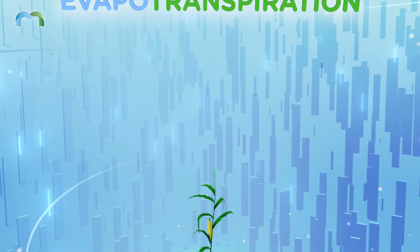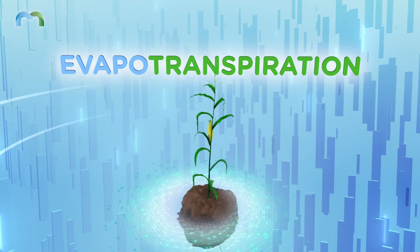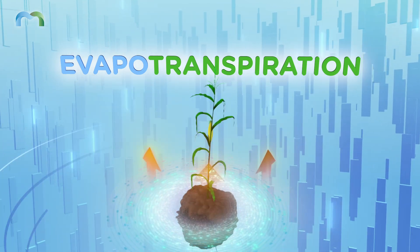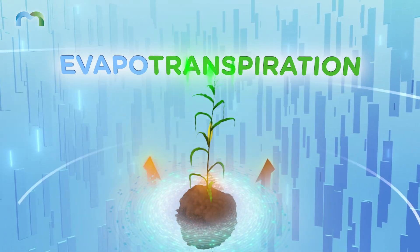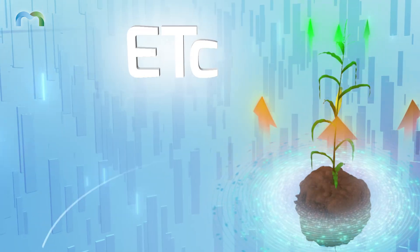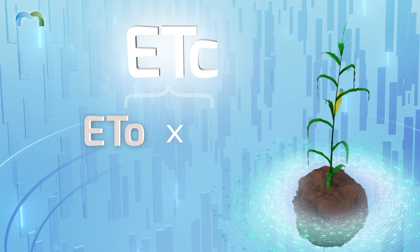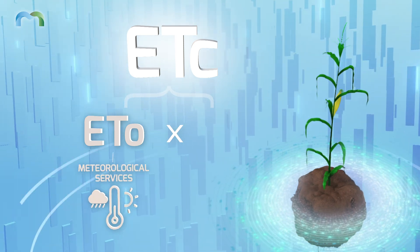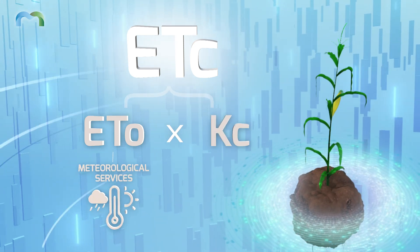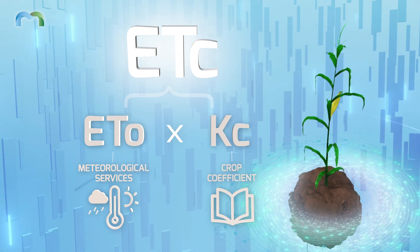Here's how. First, let's review the basics. Normally, growers calculate crop water usage, also known as ETC, by multiplying ETO, the daily reference evapotranspiration figure they get from meteorological services, by KC, the crop coefficient received from KC protocols.